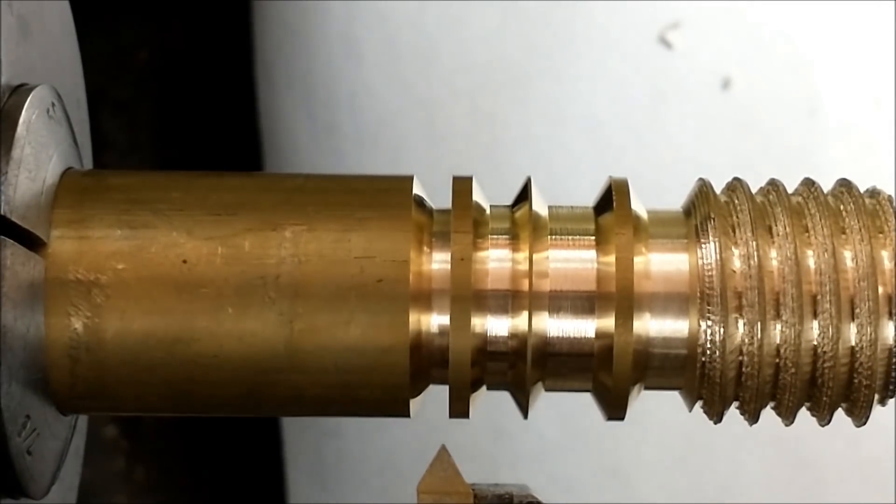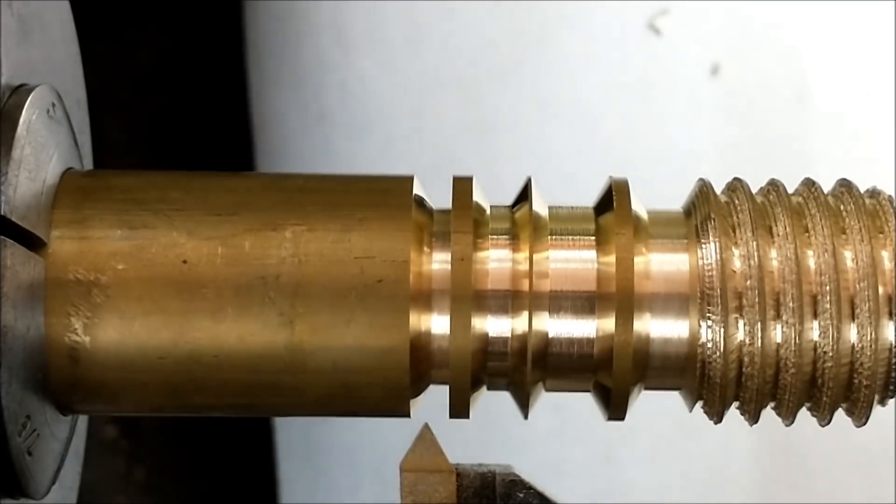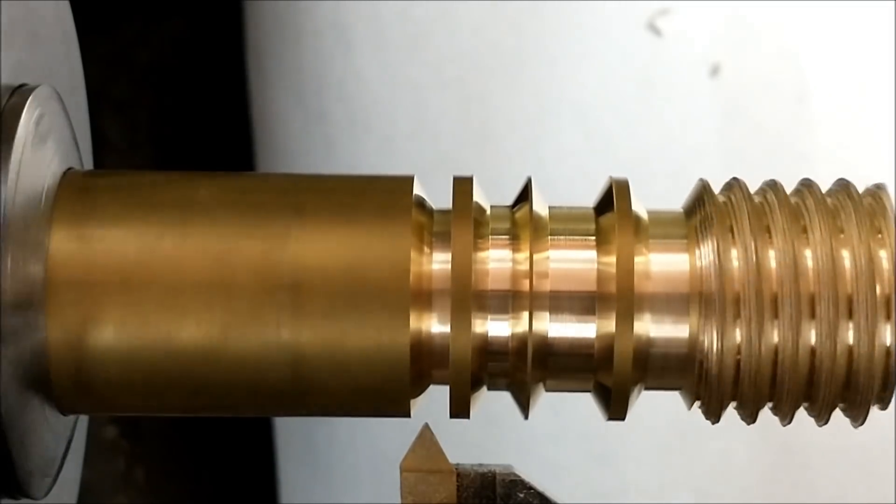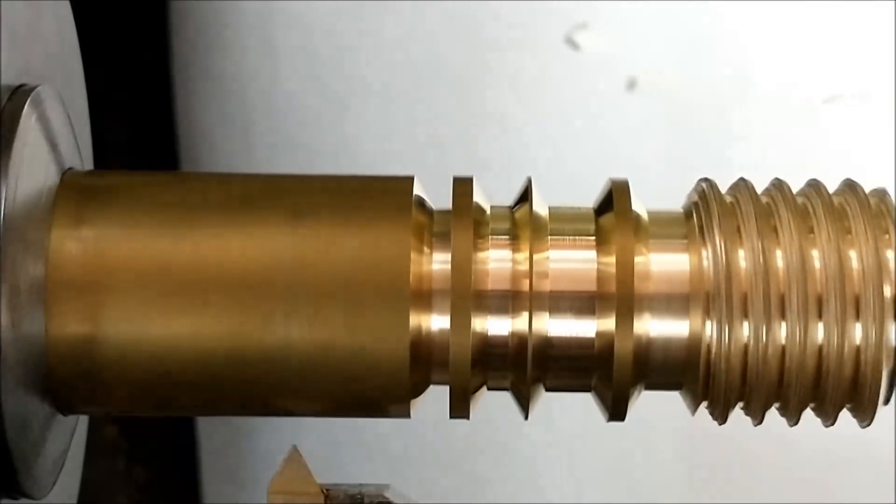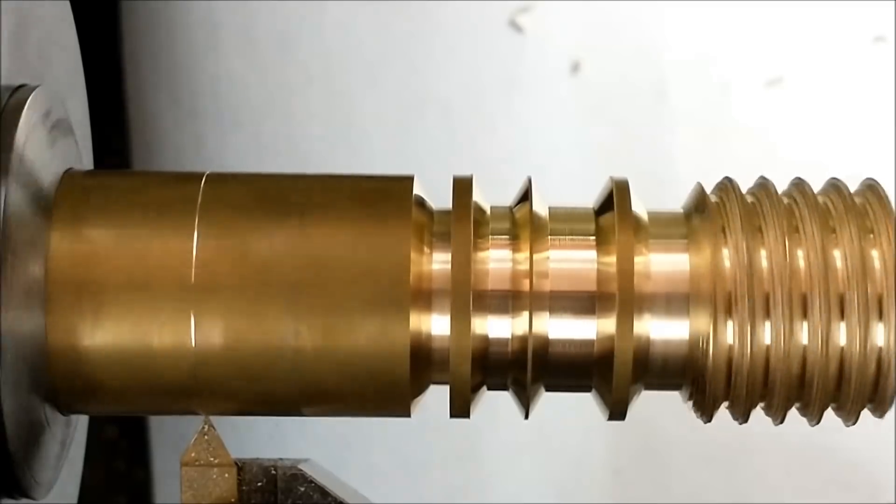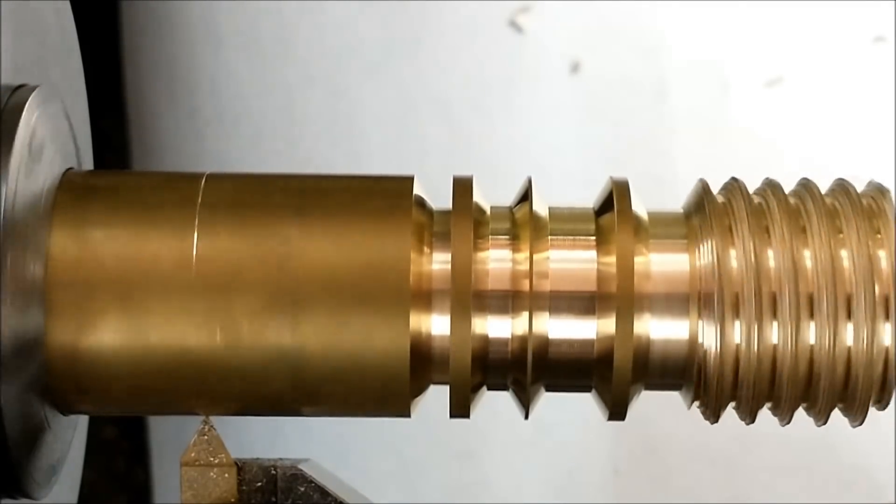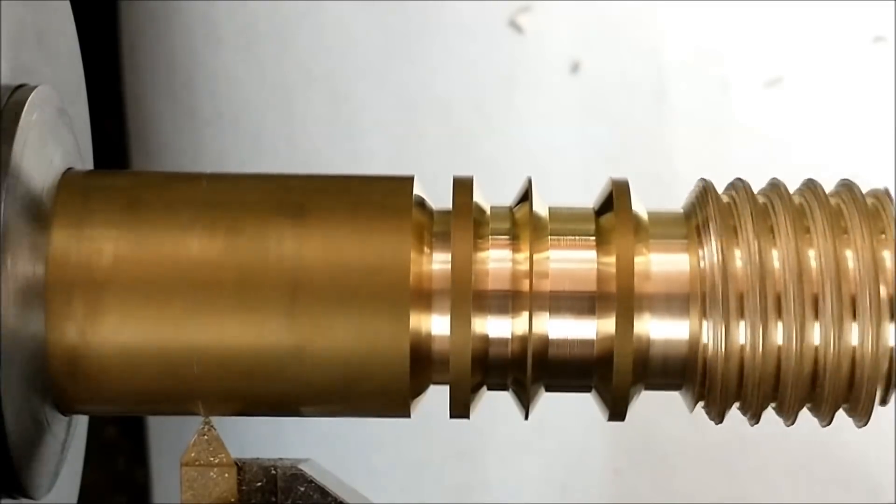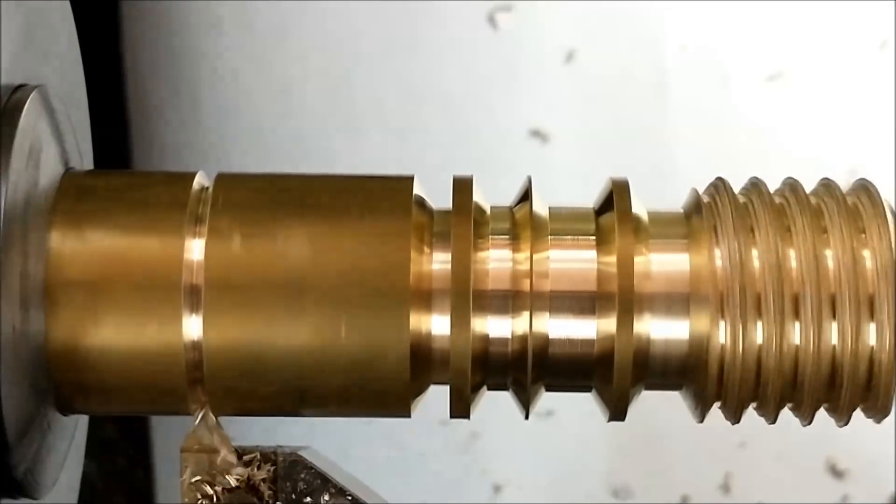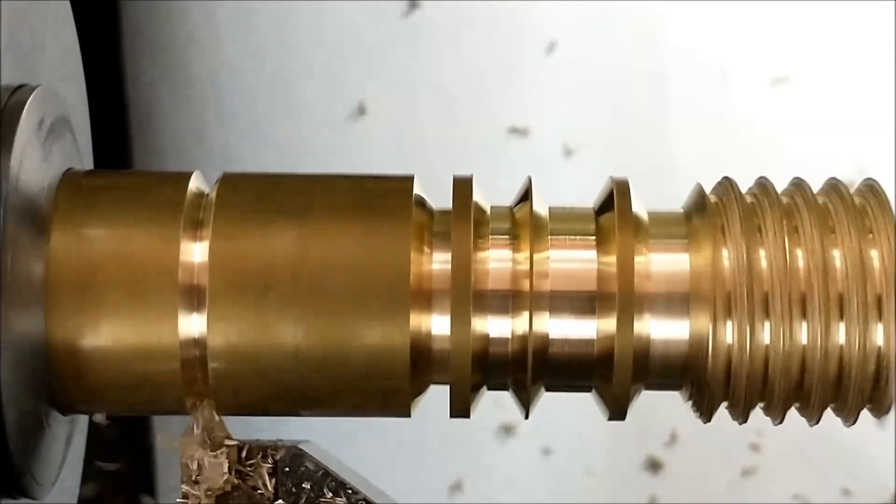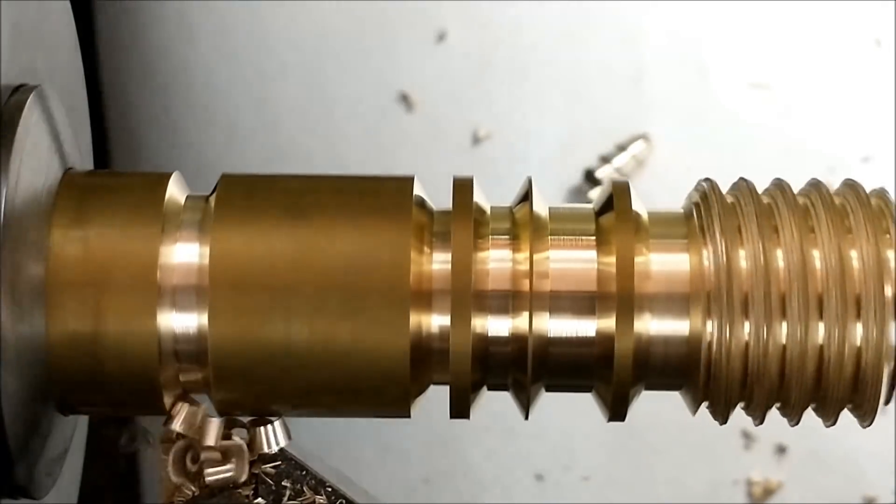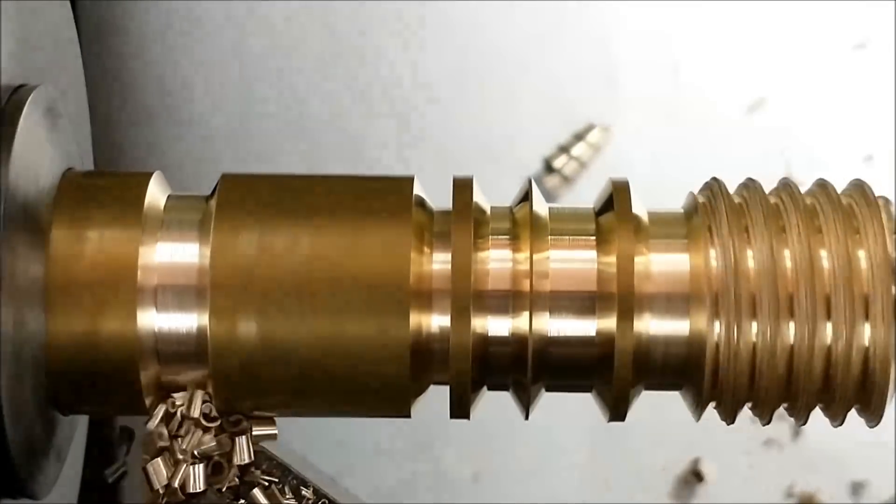Just to compare apples to apples, let's do the threading tool the exact same way as I just did with the half tool. Full profile, using the compound only. The compound is currently set on zero. Make the contact and go 160 deep.